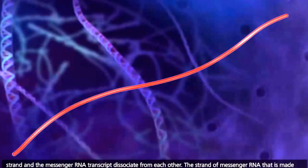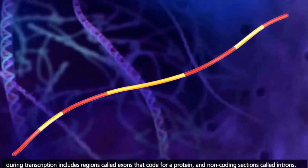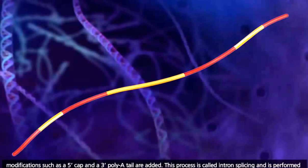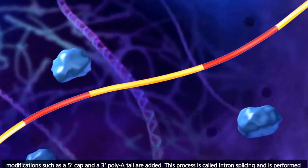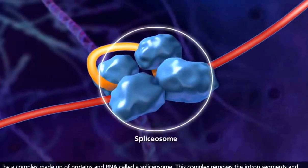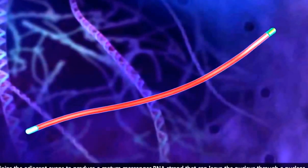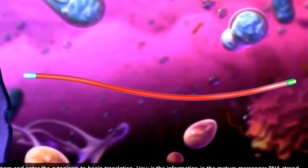The strand of messenger RNA that is made during transcription includes regions called exons that code for a protein, and non-coding sections called introns. In order for the messenger RNA to be used in translation, the non-coding introns need to be removed, and modifications such as a 5' cap and a 3' poly-A tail are added. This process is called intron splicing, and is performed by a complex made up of proteins and RNA called a spliceosome. This complex removes the intron segments and joins the adjacent exons to produce a mature messenger RNA strand that can leave the nucleus through a nuclear pore and enter the cytoplasm to begin translation.